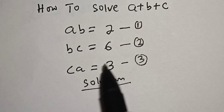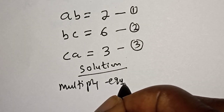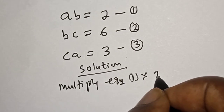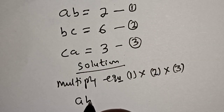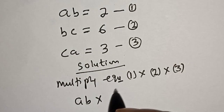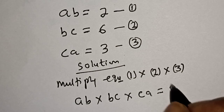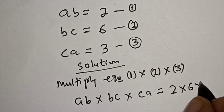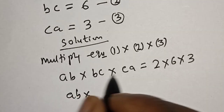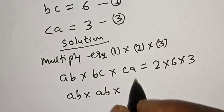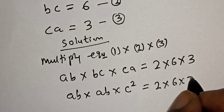Now let's multiply equation 1 by equation 2 by equation 3. So, equation 1 is AB, multiplied by equation 2 is BC, multiplied by equation 3 is CA, is equal to 2 multiplied by 6 multiplied by 3. And we have A²B²C² equal to 2 times 6 times 3.